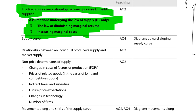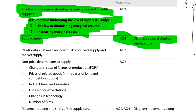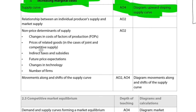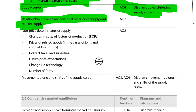The supply curve is upward sloping, as we covered. Assessment objective four may require you to draw and explain the supply curve, including the relationship between individual producer supply and market supply, which could appear on paper one part A or part B.